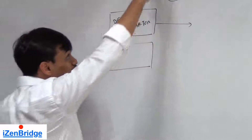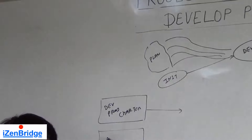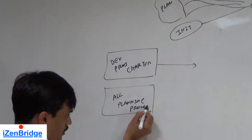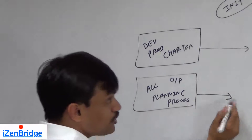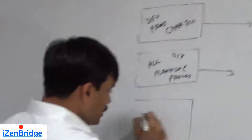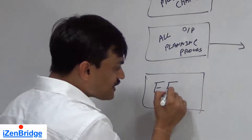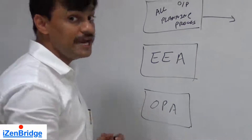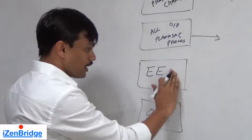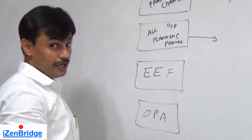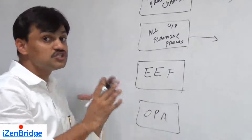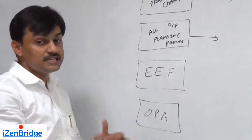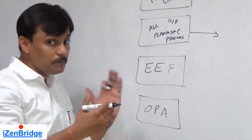Develop Project Management Plan also takes input from all planning processes, so the outputs of all planning processes become input information as well. We can never overlook enterprise environmental factors and organizational process assets. For example, you need to know the work authorization systems in the organization and where templates or repositories of previously done projects are placed.